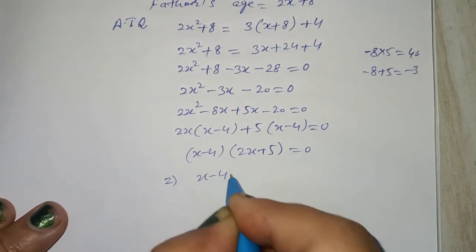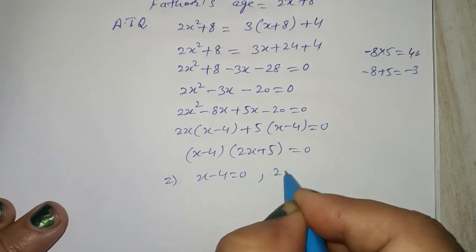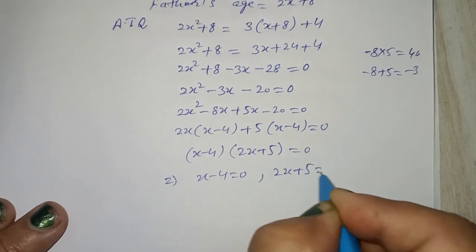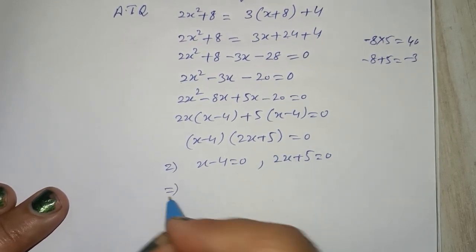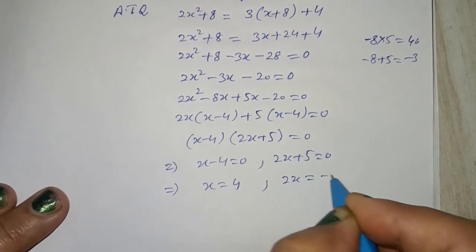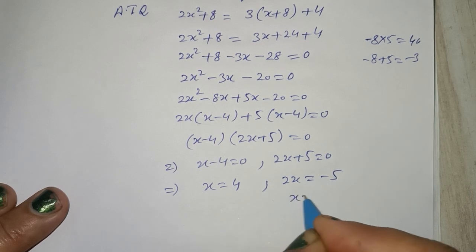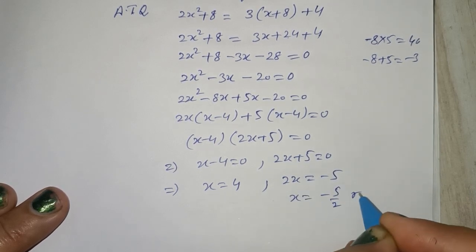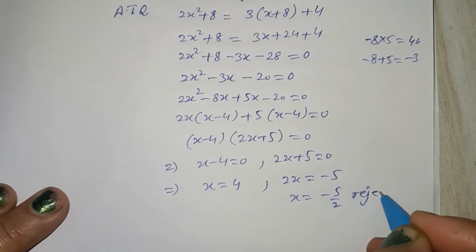x minus 4 is equal to 0. 2x plus 5 is equal to 0. x is equal to 4. 2x is equal to minus 5, x is equal to minus 5 upon 2, rejected because age cannot be negative.